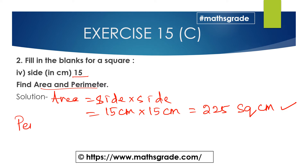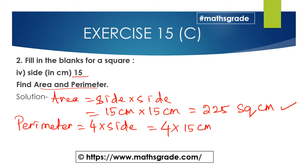Now the perimeter of the square. The formula is 4 multiplied by side. The side is 15 centimeters, so 4 × 15 = 60 centimeters. So the perimeter of the square is 60 centimeters and the area of the square is 225 square centimeters.